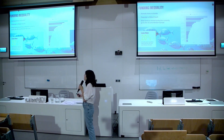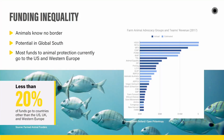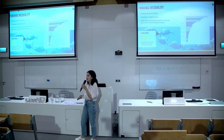A report from Farm Animal Funders from around 2022 states that less than 20% of funding goes to countries other than the US, UK, and Western Europe. So there is a clear imbalance. The potential in the Global South — because of the sheer number of animals — is enormous, but that potential is not yet being taken advantage of.